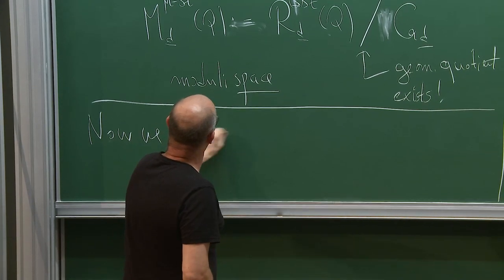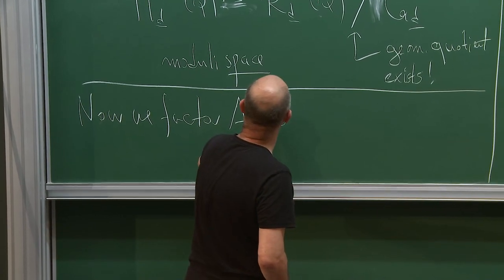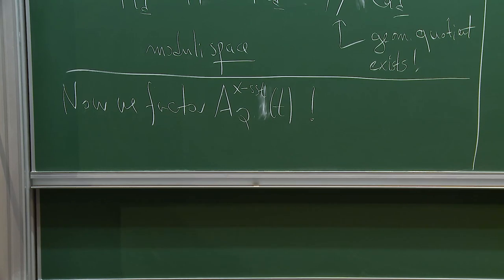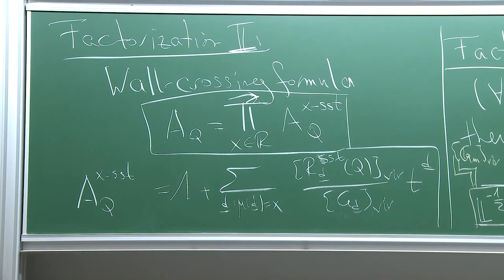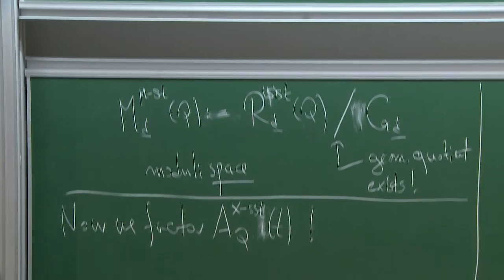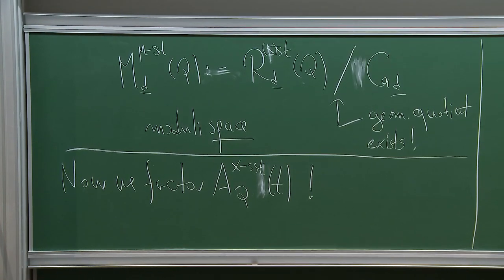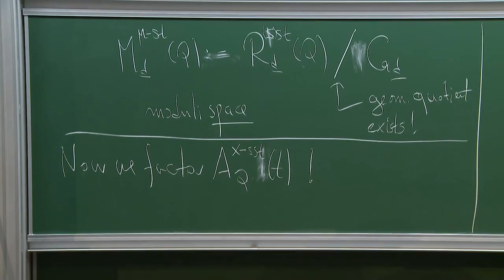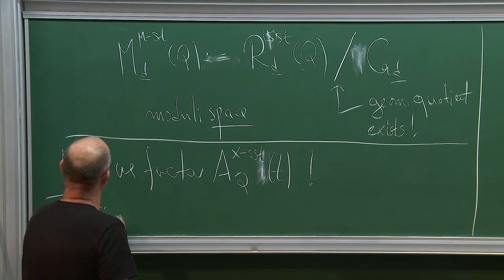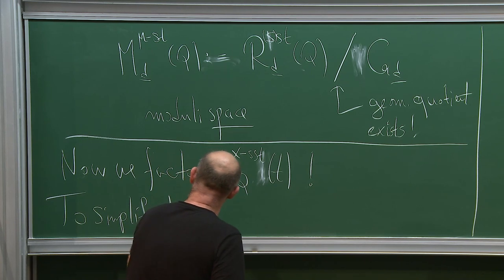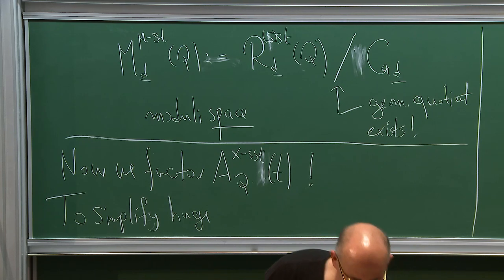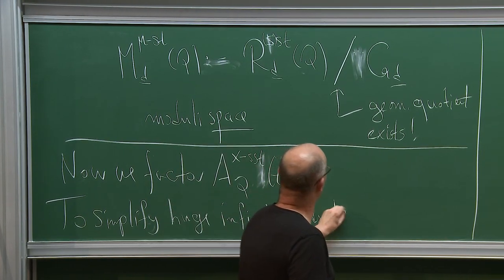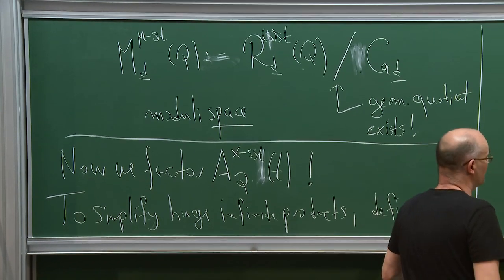Now we factor this local series. In the first step we factorize the global series into these slope-local series, and now we want to factor this series further. To efficiently do this factorization we need a bit of notation, otherwise we will have lots of ugly threefold infinite products. That's why we introduce the so-called plethystic exponential — a very small notational intermission before we come back to the geometry — to simplify a huge infinite product.